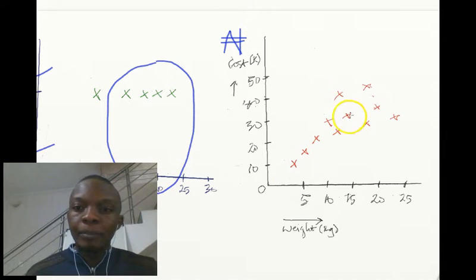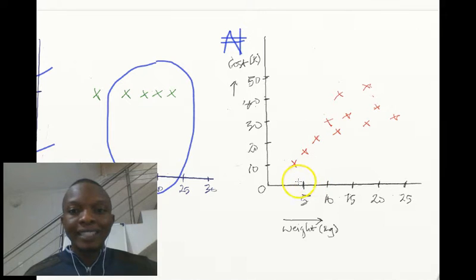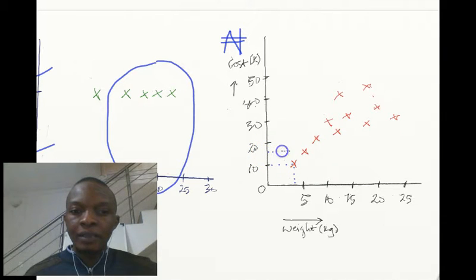We have the weight of the goats: 5 kg, 10 kg, 15, 20, 25 kg of goats. We have data points of how much we've sold goats in the past. For instance, we sold a goat that was around 4 kg for 10,000 naira in the past. Sometime later we sold a goat of around 6 kg for around 17,000 naira.